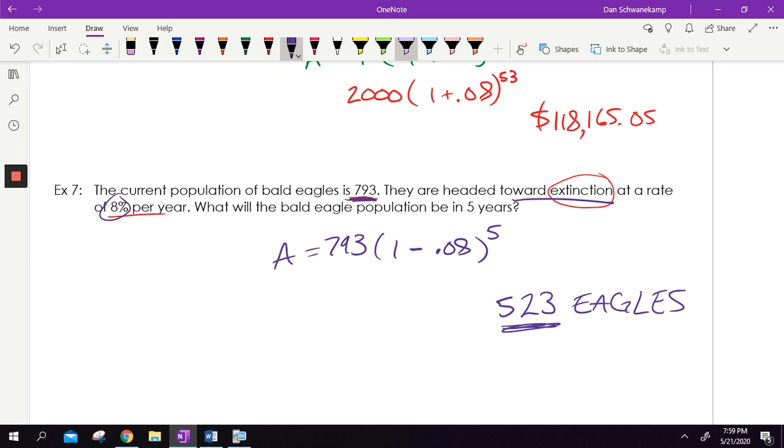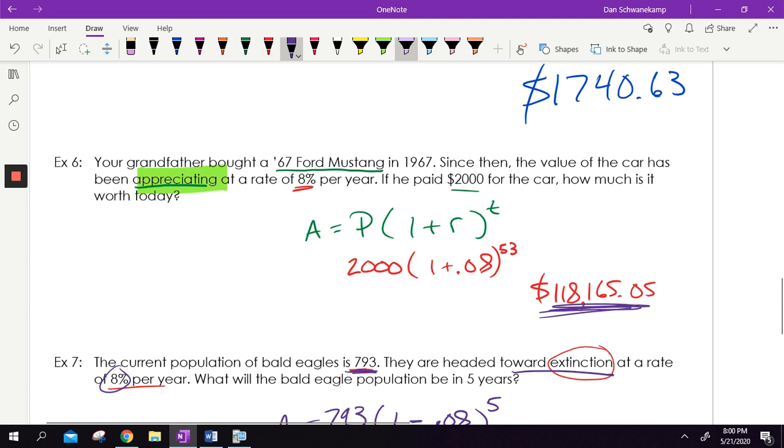Hopefully, though, not to get distracted, you're understanding exponential growth and decay. Again, a pretty easy formula. You plug in, you hit some buttons, and you can see how something is growing pretty quickly. You can see, like on this one, that $2,000 car became worth a whole lot more pretty quick. If you have questions, ask me. Good luck on your next one.